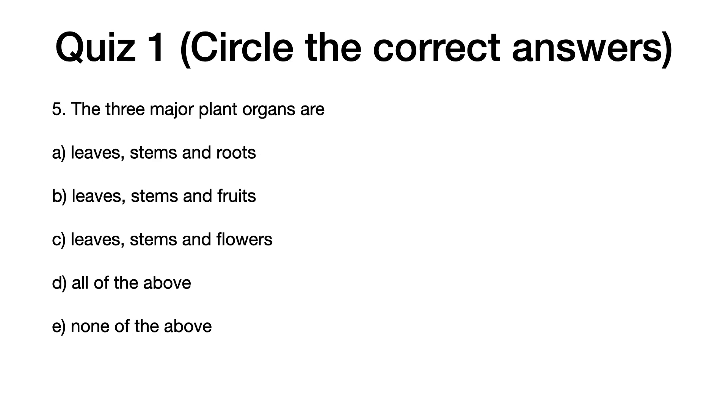Question five: The three major plant organs are a) leaves, stems, and roots, b) leaves, stems, and fruits, c) leaves, stems, and flowers, d) all of the above, e) none of the above.